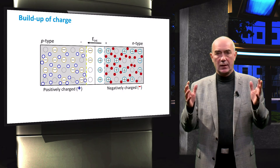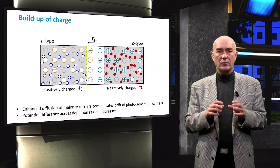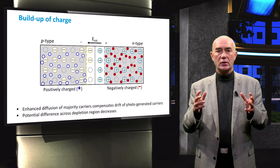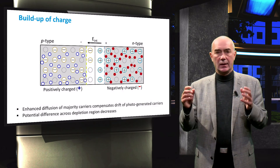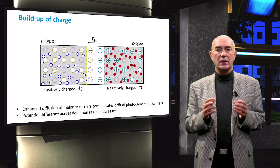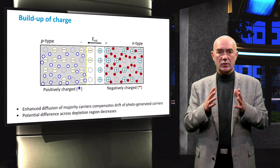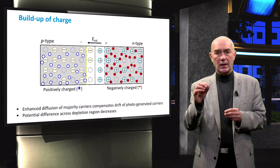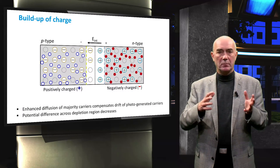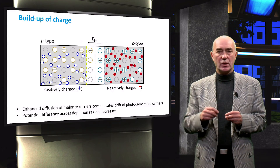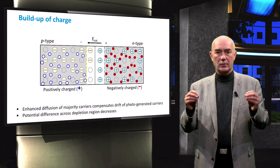To summarize: at steady state, the drift current of photogenerated minority carriers is balanced by the diffusion of majority carriers across the depletion region. This results in a narrowing of the depletion region and a smaller potential difference across it. However, the N-type and P-type regions become negatively and positively charged with respect to each other, creating an electrochemical potential difference between the two regions.